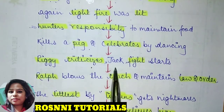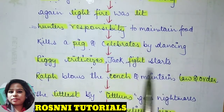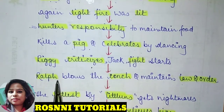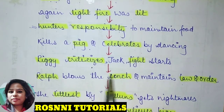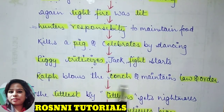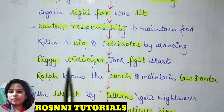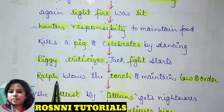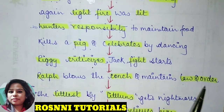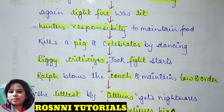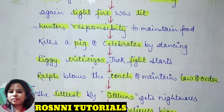Piggy criticized them for killing the pig, and Jack and Piggy started fighting. Ralph saw the chaotic situation — his school boys were fighting — and wanted to maintain law and order. He called everyone together using the conch as a horn.